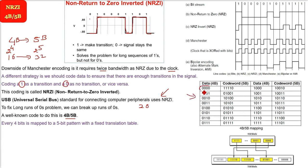For example, 0000 — four zeros — will have the code word 11110 in the 4B5B transition table.